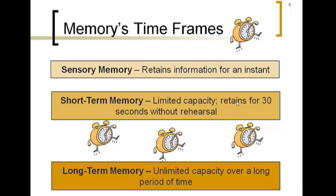What happens then is that your brain, by way of attention, selects which things it's going to keep and which things to discard. The things you don't pay attention to are gone and can't be retrieved. But the things you pay attention to will move into your short-term memory. Once information is in your short-term memory — it came in through your senses, you paid attention to it — it's held there for about 30 seconds without rehearsal. Rehearsal is a way to keep information in short-term memory. If you repeat a phone number over and over, you could theoretically keep it in short-term memory until something else bumps it out.